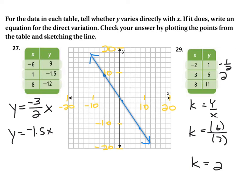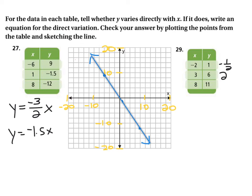This is not going to be a direct variation equation. You'll find out that this set of data points does fall in a line if you plot it, but the reason it's not direct variation is because it doesn't pass through the origin. For a direct variation equation, the line has to go through 0 comma 0. So problem 29 is not a direct variation equation.